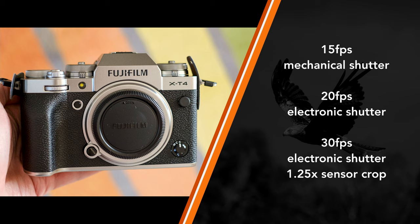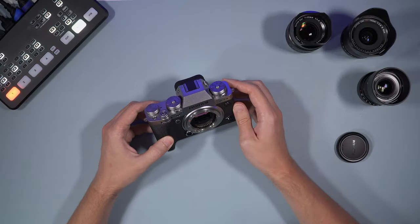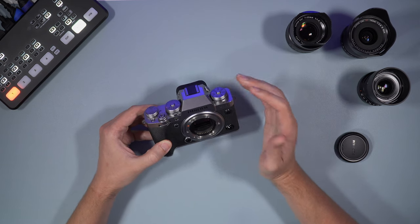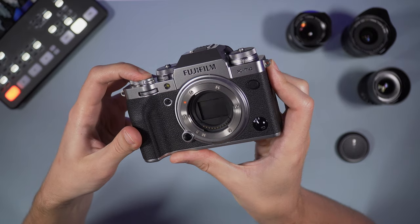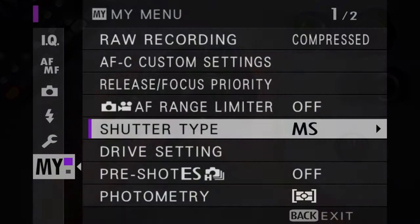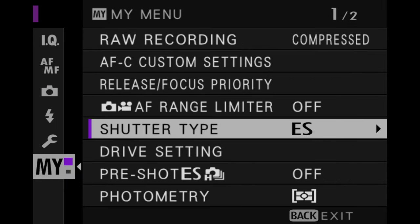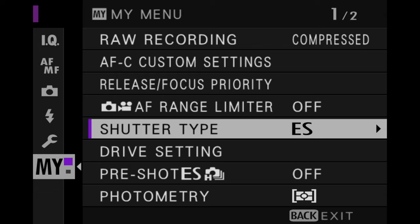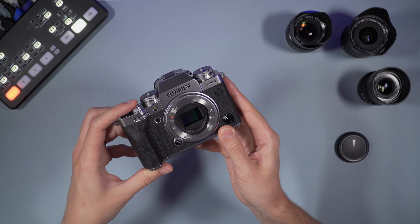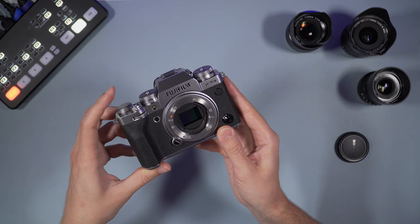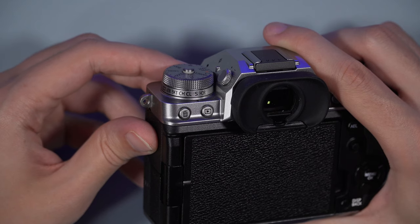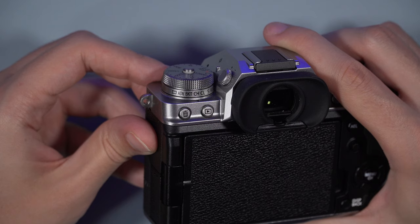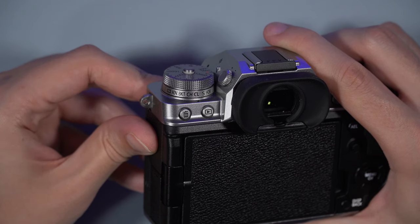These are the fastest continuous shooting speeds available with the X-T4; slower speeds such as 10fps and below are also available. We need to talk about mechanical versus electronic shutter and how it affects what you see in the viewfinder. With CH drive mode you can reach 15fps or 20fps with the electronic shutter, and with CL you get a maximum of 8fps.